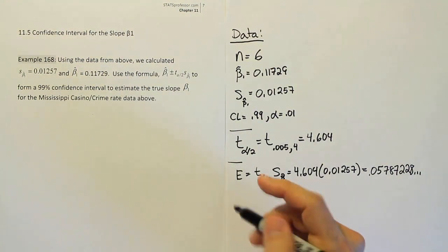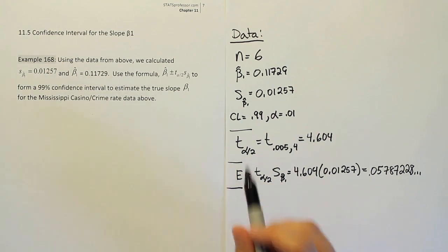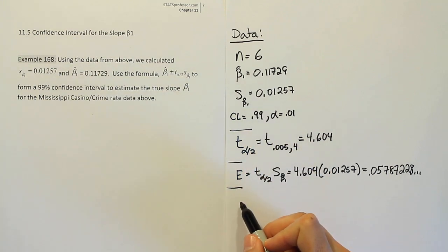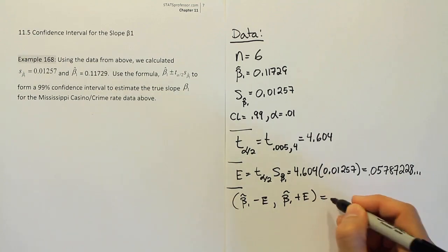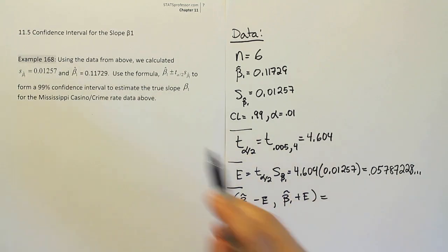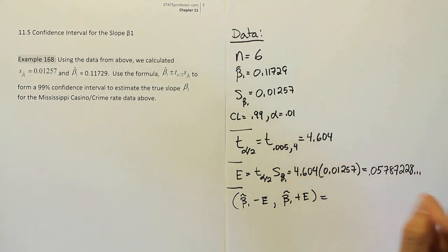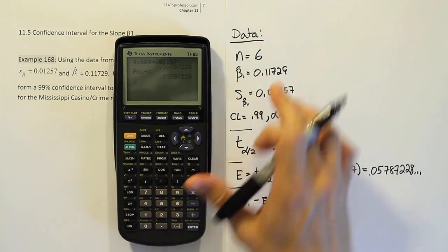Alright, the next step is the last and final step, and it's the easiest one, really. All we have to do is to take our beta 1 hat, or our point estimator for the slope, and we're going to subtract and add the error to it. So we'll do minus the error here, and then comma beta 1 hat plus the same error, and this should give us an interval that's supposed to capture the population slope, right? The true slope for the data. Alright, so let's go ahead and enter that in. Now, my calculator can do this pretty easily, so let's go ahead and do it.